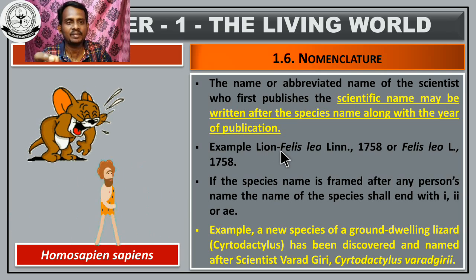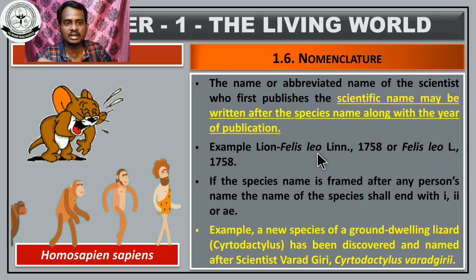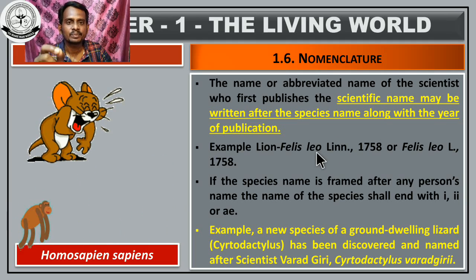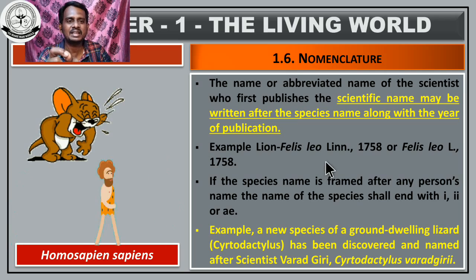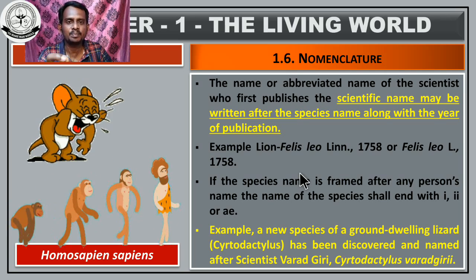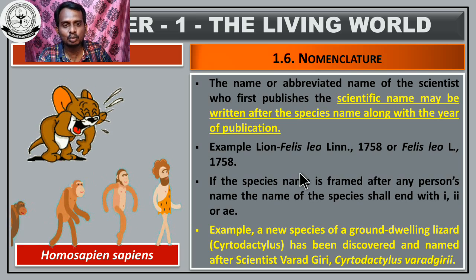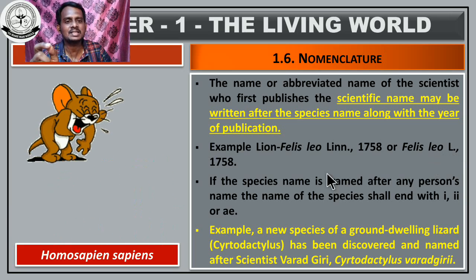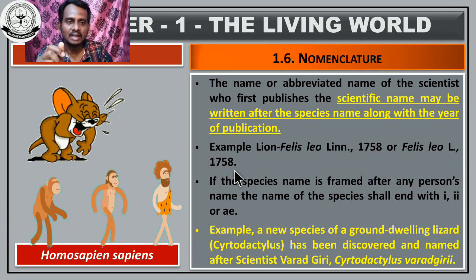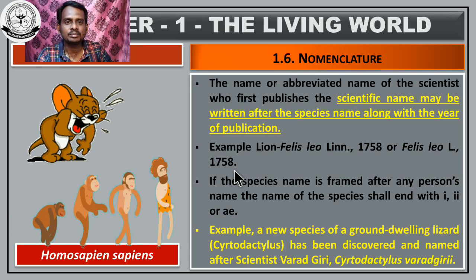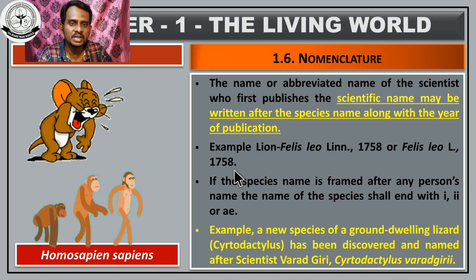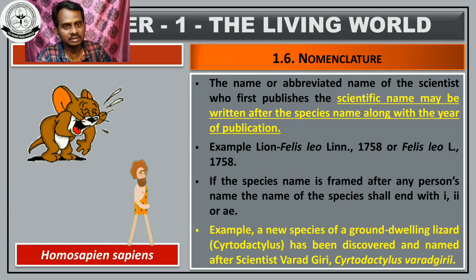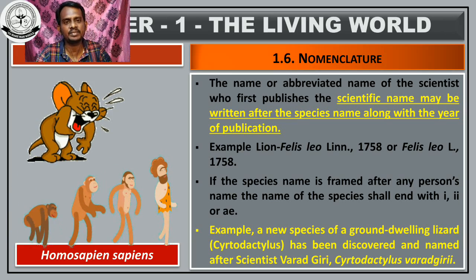For example, the zoological name of the lion is Felis leo. 'Lin' means it was named by Linnaeus. The scientist's name should be written after the species name with the year. For example, Felis leo, Linnaeus, 1758.